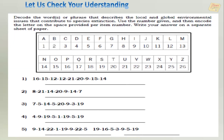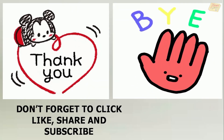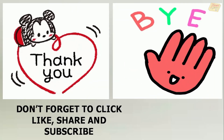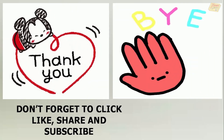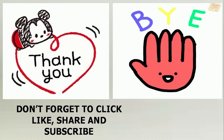Let us check your understanding. Decode the words or phrases that describe the local and global environmental issues that contribute to species extinction. Use the numbers given and encode the letters in the space provided per item number. Write your answer on a separate sheet of paper. Thank you for listening. Don't forget to click like, share, and subscribe. See you in my next video. Goodbye!